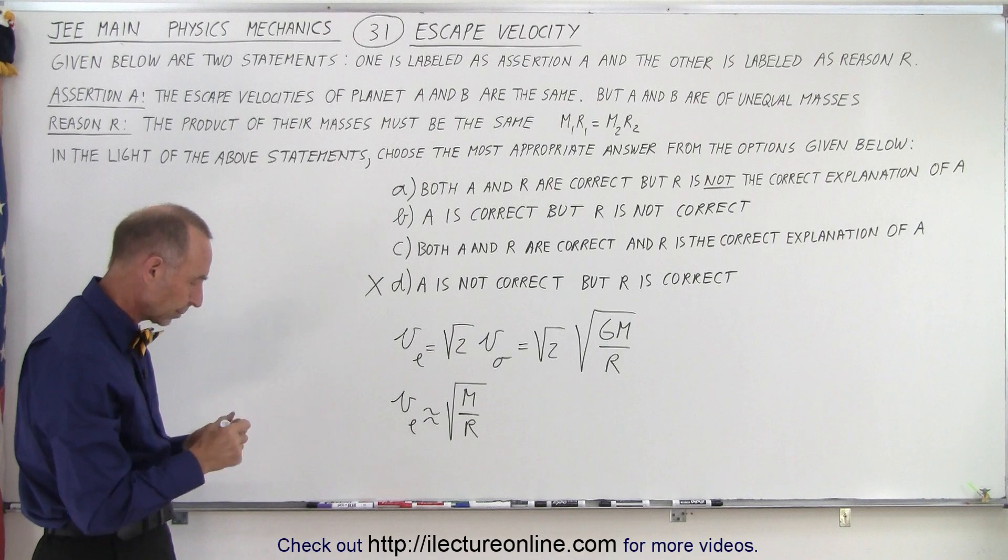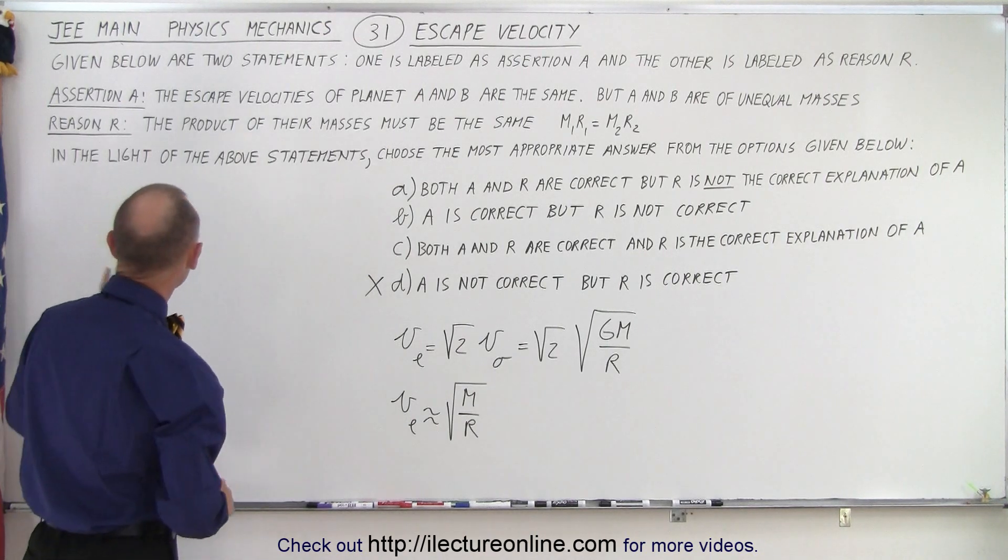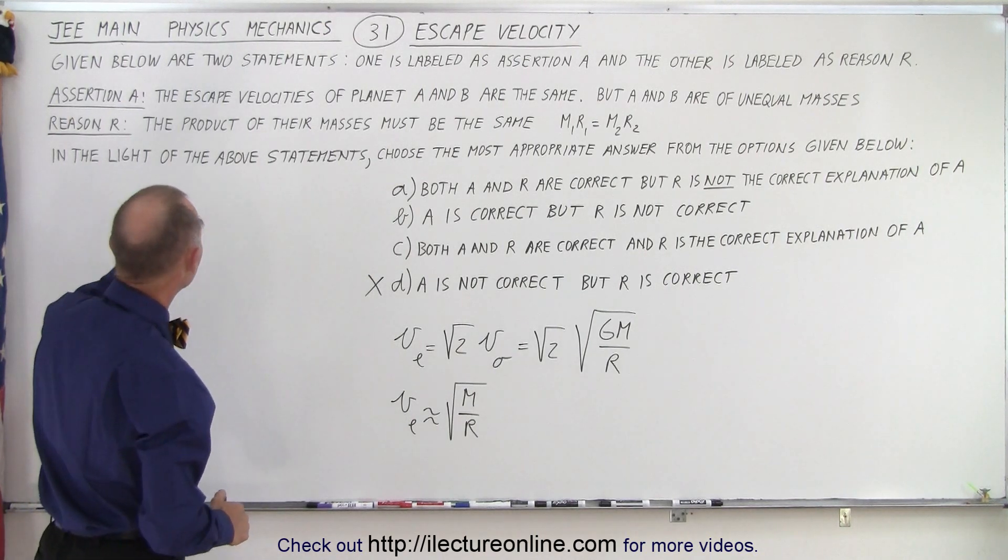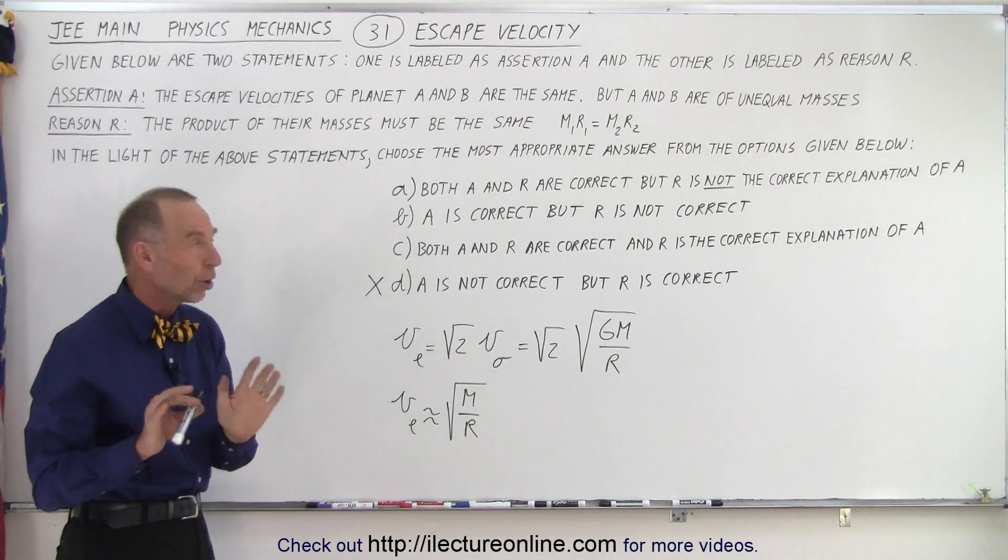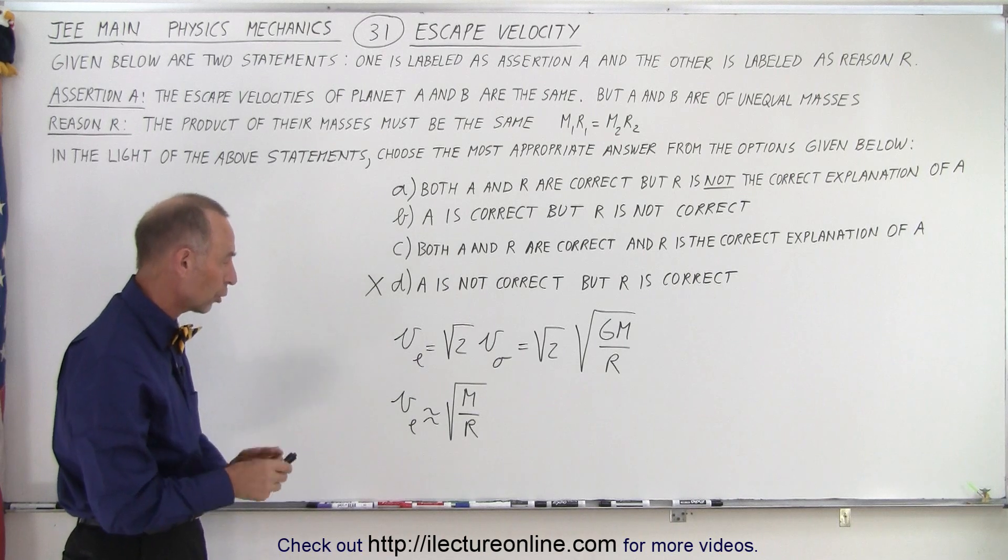Now, next. The reason that this can be true, they claim, is that the product of their masses must be the same. So, for that to be true, M1R1 must equal M2R2.